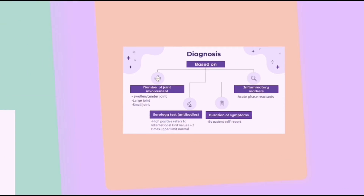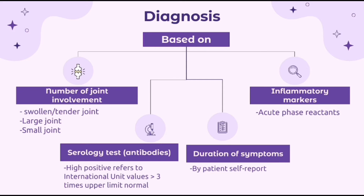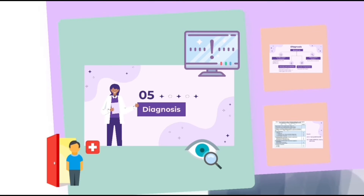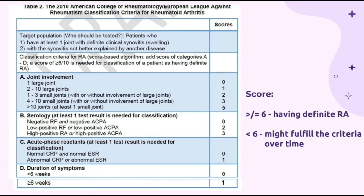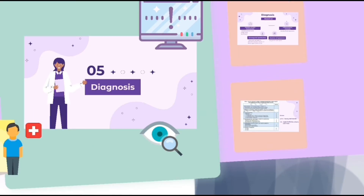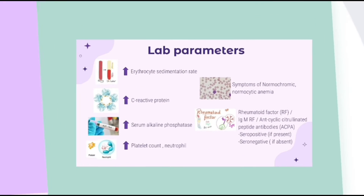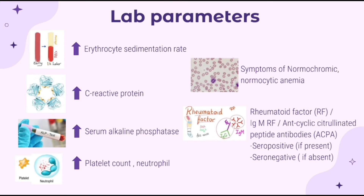Based on the video, besides physical examination of the joint, the diagnosis of RA can be based on the number of joints involved, inflammatory markers, serology tests, and duration of symptoms — as outlined in the ACR criteria table for RA. For blood tests, positive results for rheumatoid arthritis will show an increase in erythrocyte sedimentation rate, increase in C-reactive protein, serum alkaline phosphatase, blood count, and neutrophil levels, as well as symptoms of anemia. Additionally, a positive rheumatoid factor indicates the presence of RA.